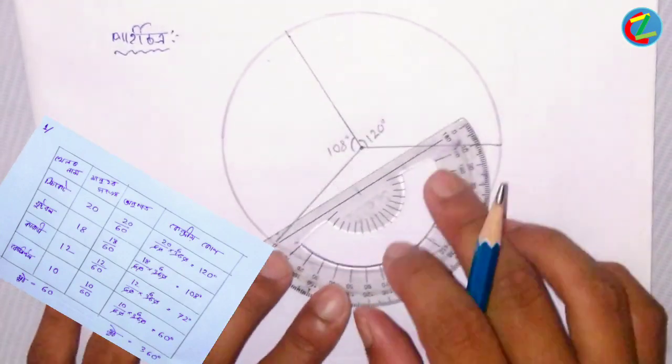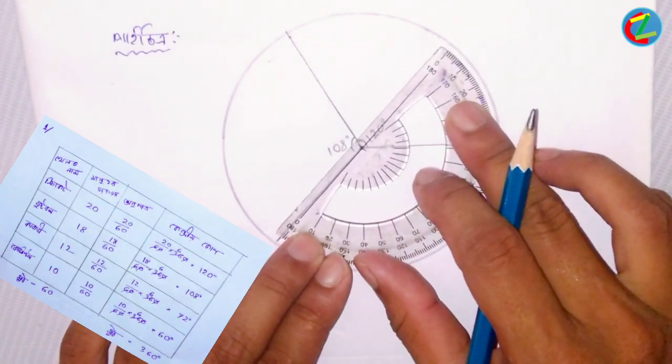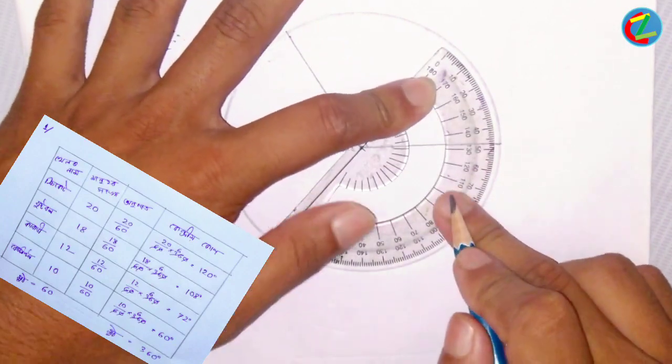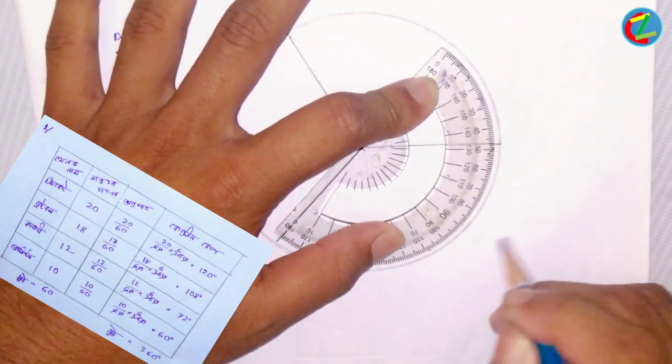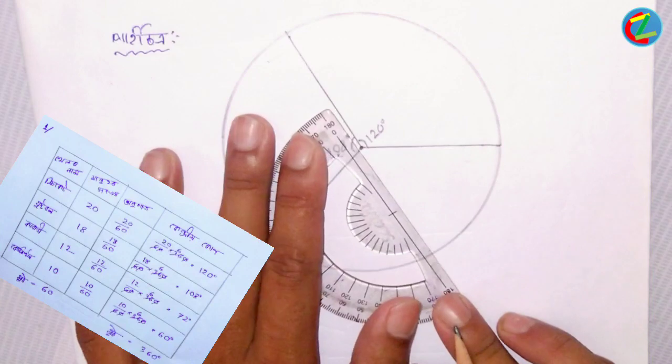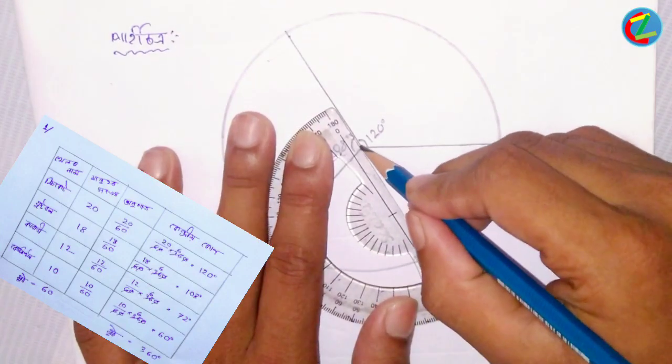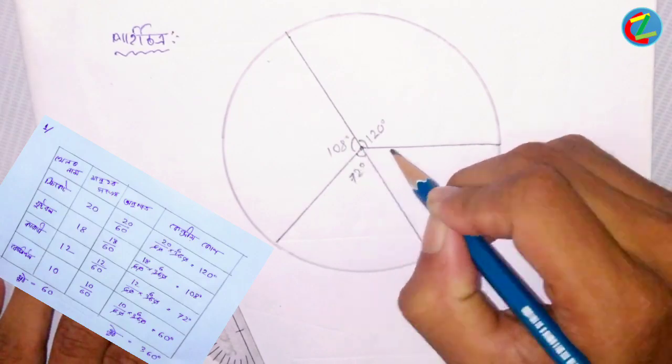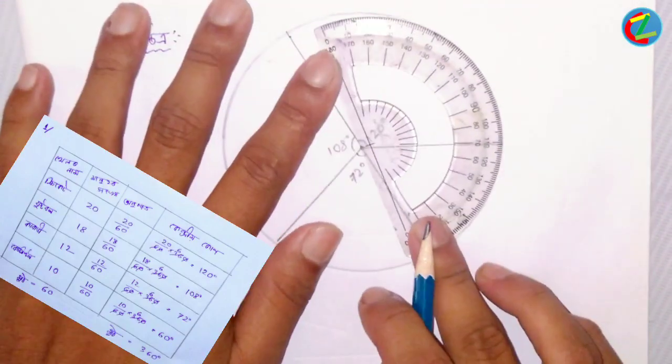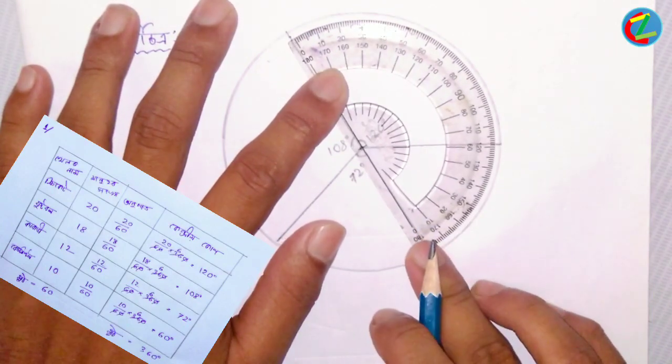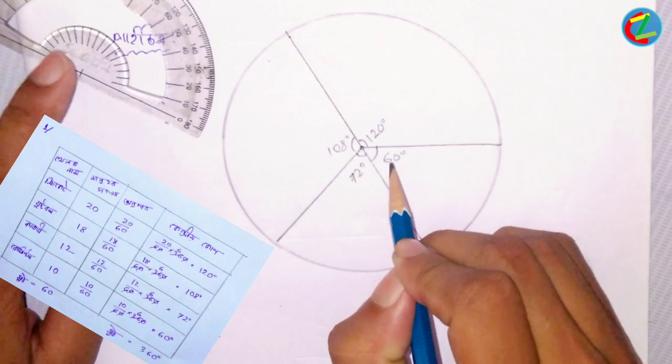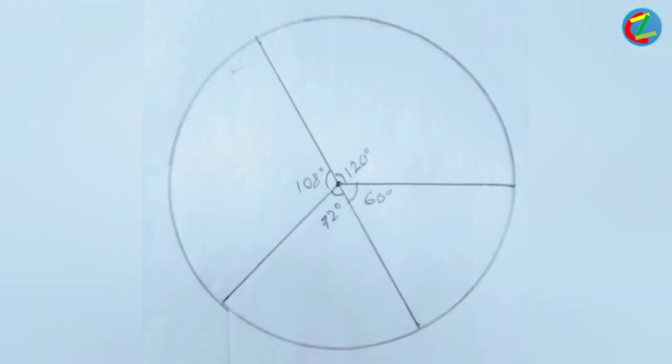For cricket, we have 72 degrees. The calculation gives us 72 degrees for this section. Now, let me show you how to complete the conversion. We need to divide the circle properly to represent each sport.